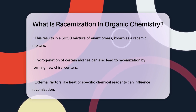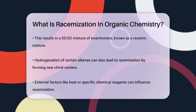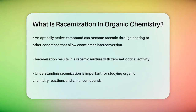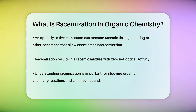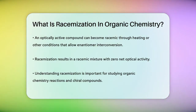Racemization can also be influenced by external factors such as heat or the presence of certain chemical reagents. For instance, an optically active compound can become a racemic mixture simply by being heated or exposed to specific conditions that allow the enantiomers to interconvert. To summarize, racemization is a process where a single enantiomer of a chiral molecule is converted into an equal mixture of both its enantiomers, resulting in a racemic mixture with zero net optical activity. This process is crucial in understanding many organic chemistry reactions and the properties of chiral compounds.